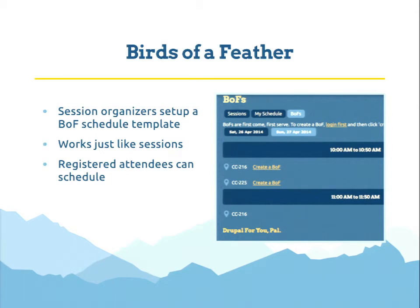For birds of a feather, the grid is where people can set up a template saying when BOFs can occur. This generates a view that shows a time slot and a room, and registered attendees can click to create a BOF. It works just like sessions — they add a time, maybe add some slides, and users can add it to their schedule through the same flag, and it appears in the same row with sessions.